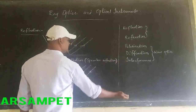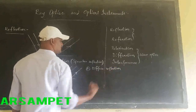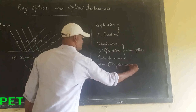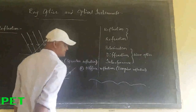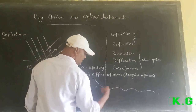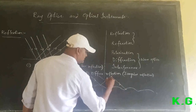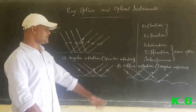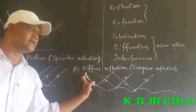The second type is diffused reflection, also known as irregular reflection. Diffused reflections come from a rough surface. The incident light falls on an irregular or rough surface and is reflected into the same medium. Reflection which comes from a rough surface is known as diffuse or irregular reflection.